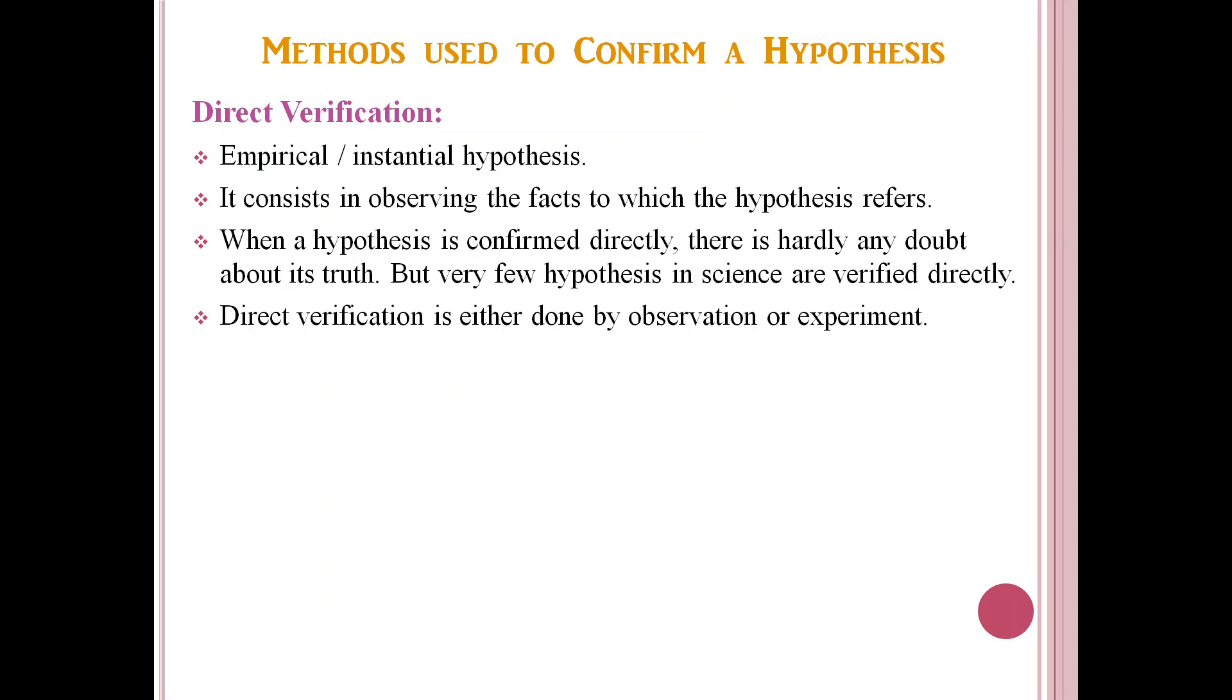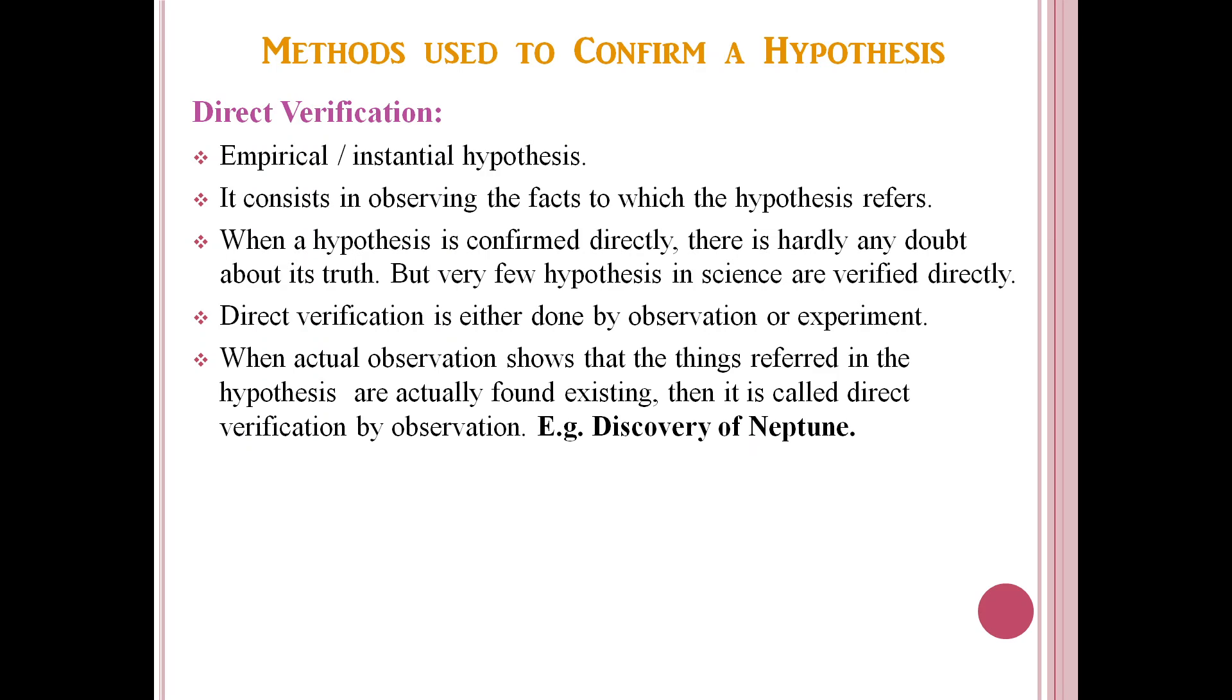Direct verification is either done by observation or experiment. When actual observation shows that the things referred in the hypothesis are actually found existing, then it is called direct verification by observation. Let us take an example: discovery of Neptune.